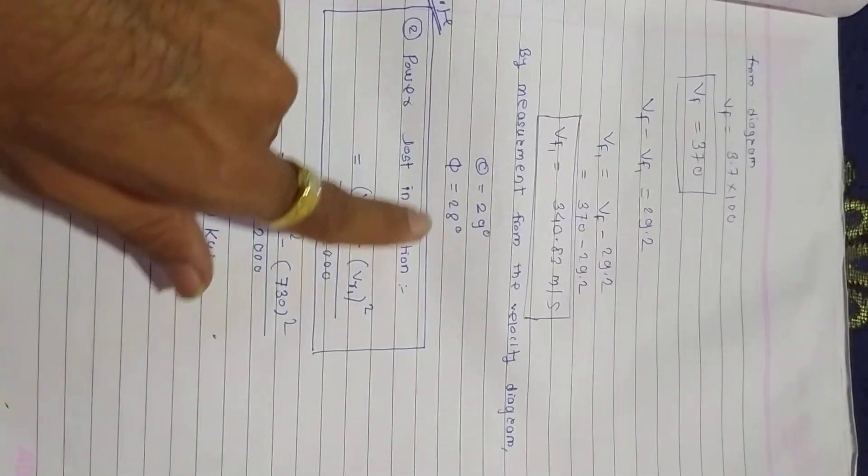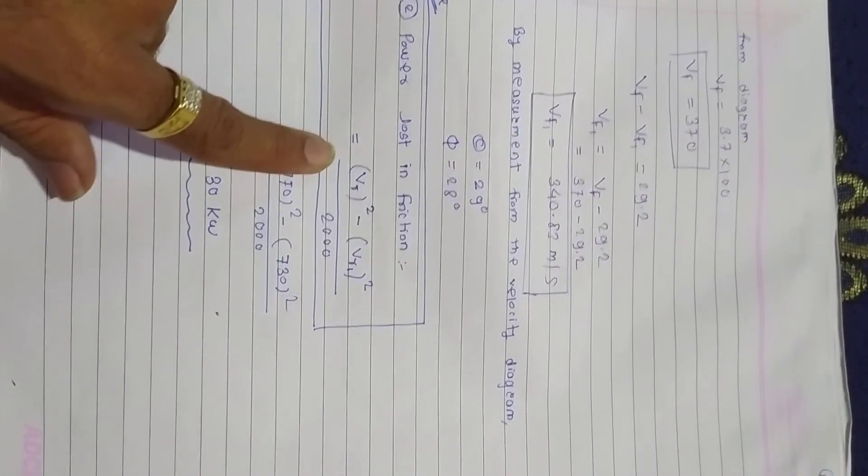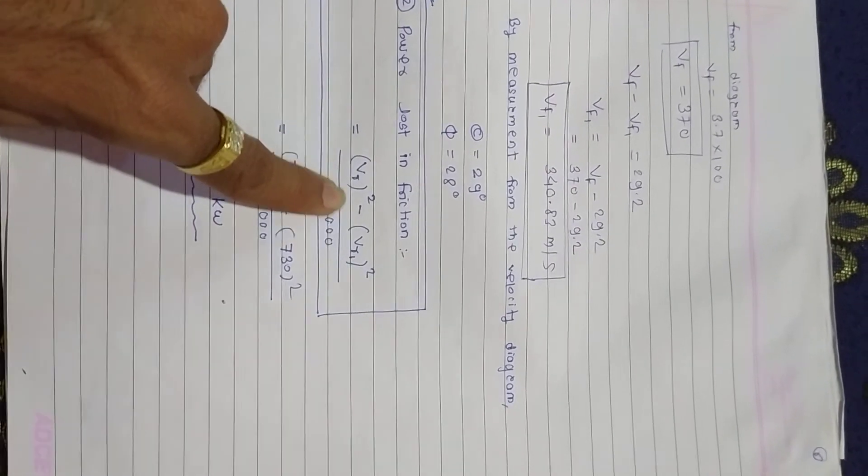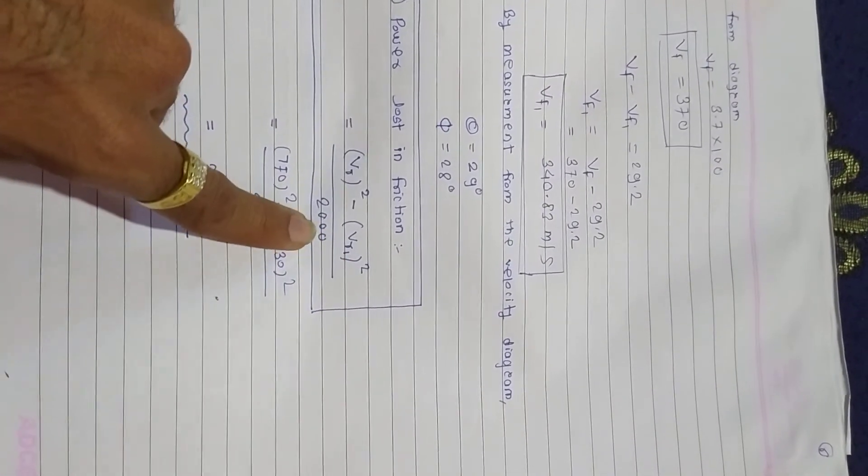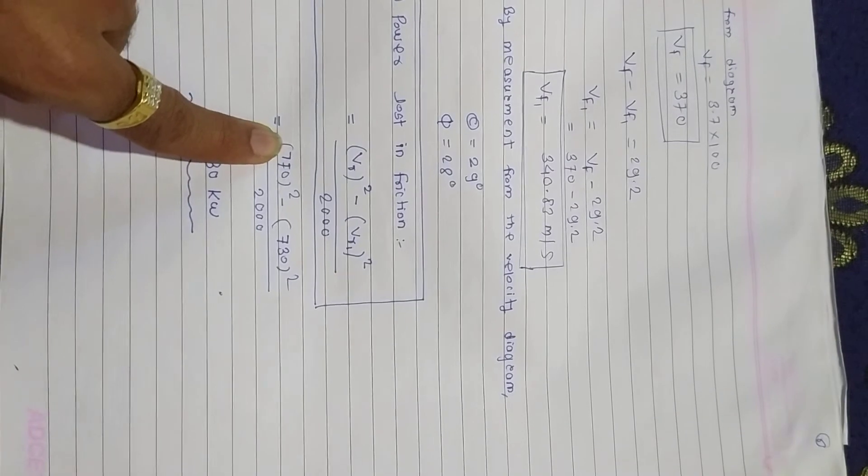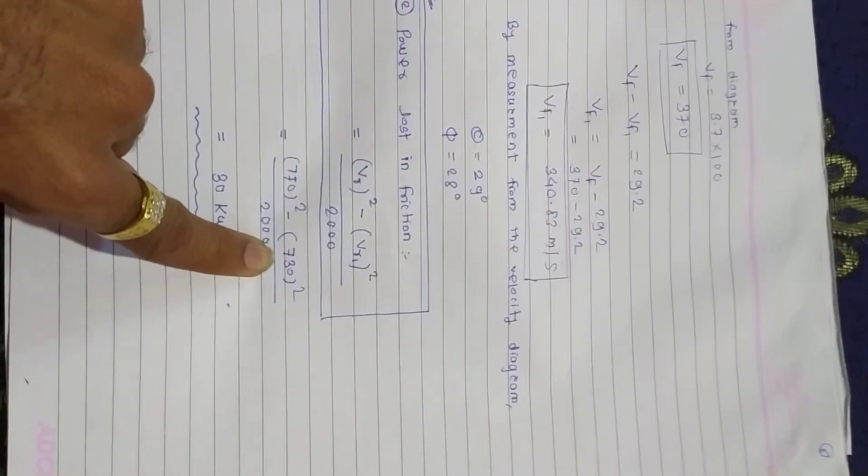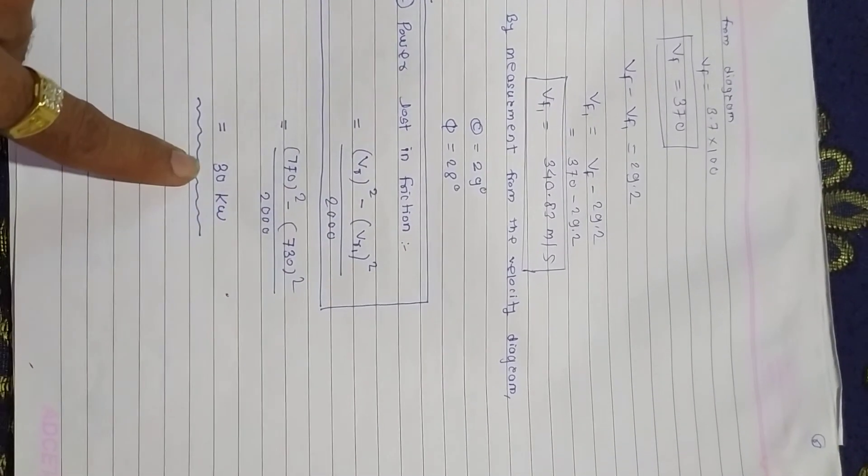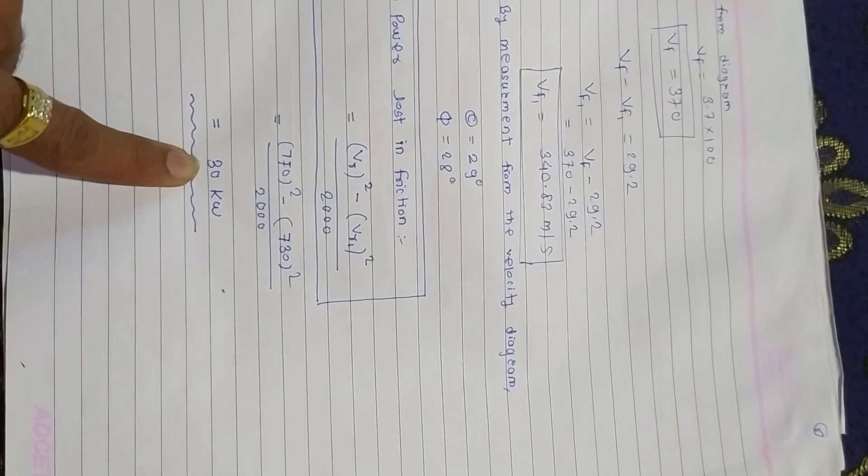Now they also ask for power lost in friction. The formula is (VR squared minus VR1 squared) divided by 2000, where VR is relative velocity inlet and VR1 is relative velocity outlet. So the power lost in friction is around 30 kilowatts.